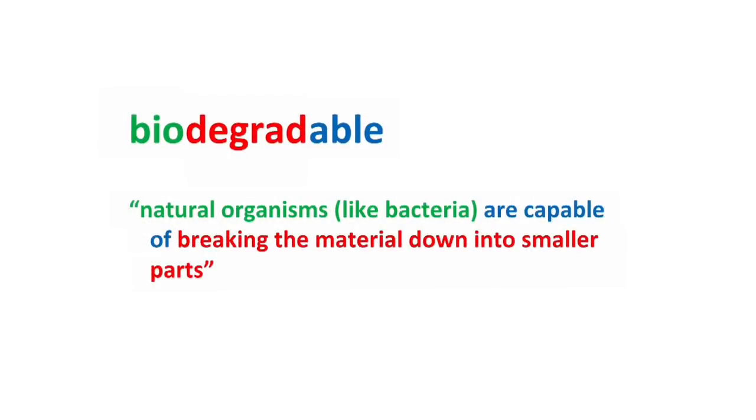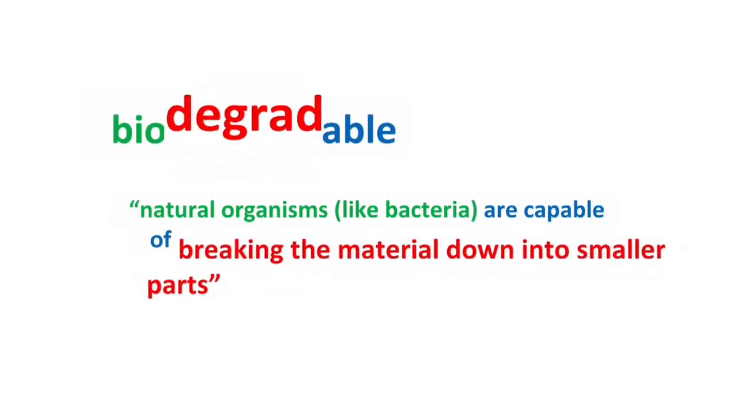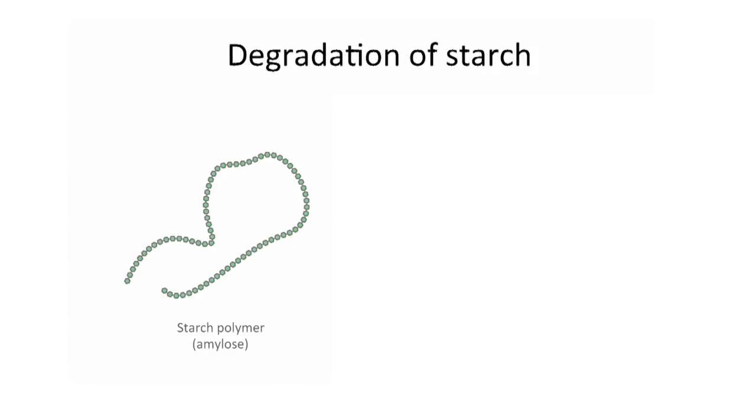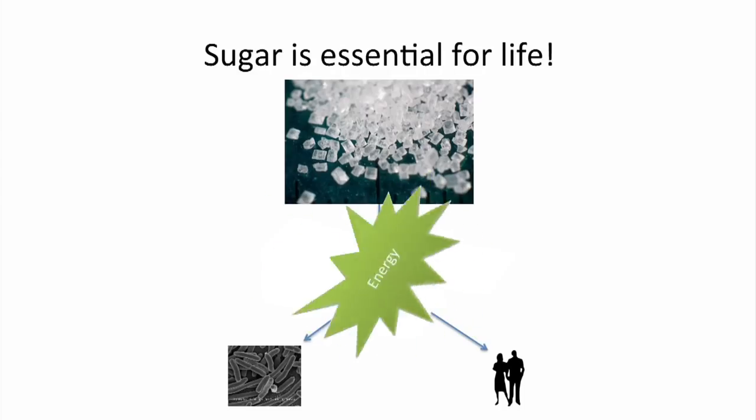Now the key reason why we chose to use starch as our polymer is that it's biodegradable. That means natural organisms like bacteria are capable of breaking down the material into smaller parts. In this case we take a polymer, our starch, and break it down into its monomer parts, in this case simple sugars. Sugars are a vital energy source for all living organisms. As a result many organisms from bacteria to humans have enzymes that break starch into simple sugars.